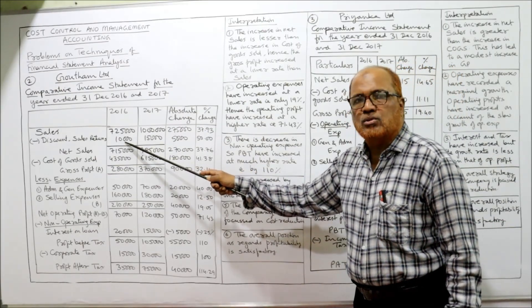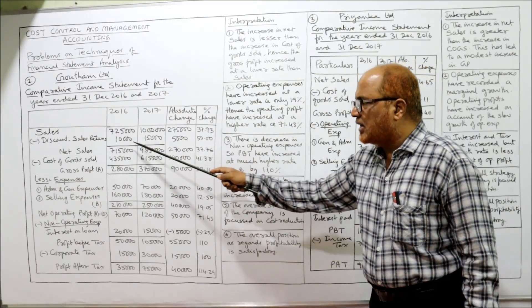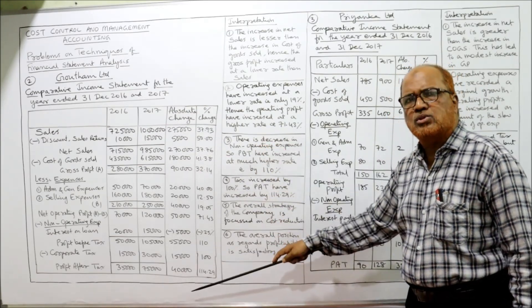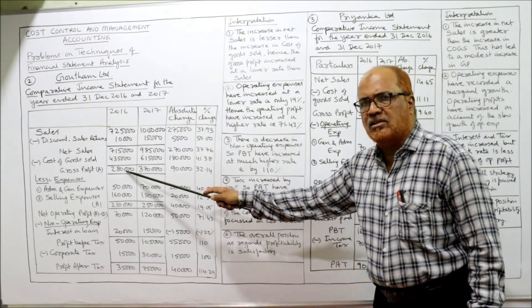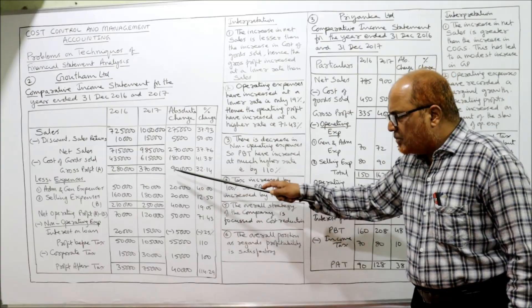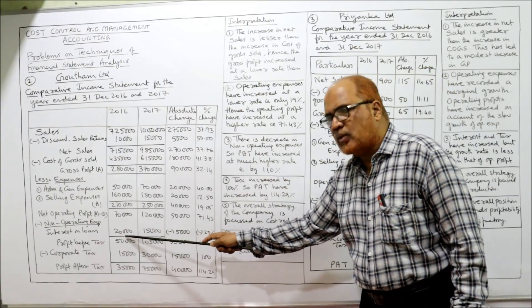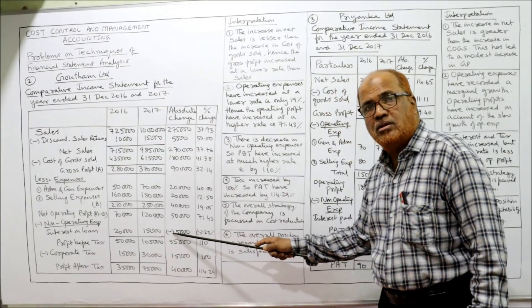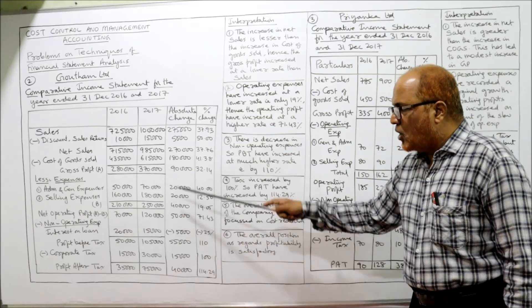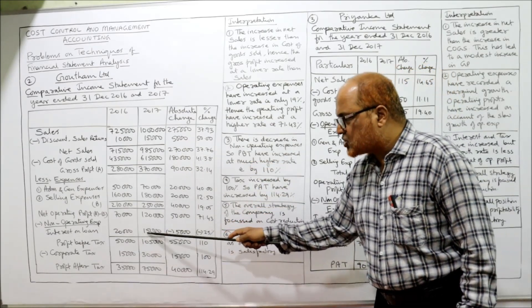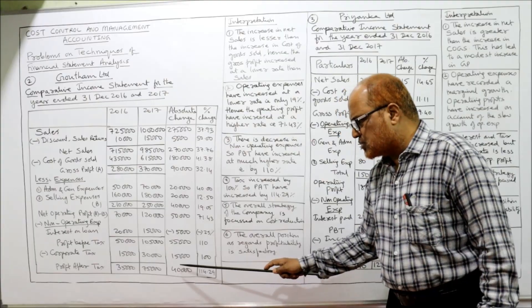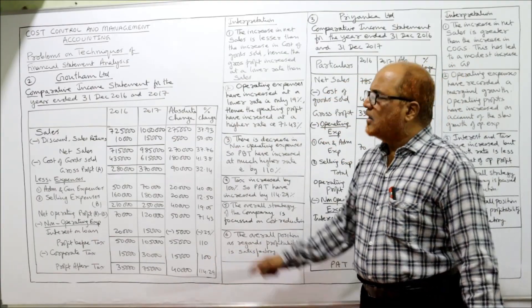Similarly, 15,000 minus 10,000 is 5,000; 5,000 divided by 10,000 into 100 gives 50%. The same procedure applies for all values. For gross profit: 370 minus 280 is 90,000; 90,000 divided by 2,80,000 gives 32.4%. Note that interest on loan: 15,000 minus 20,000 gives minus 5,000, so minus 5,000 divided by 20,000 into 100 gives minus 25% — meaning that expense decreased. Profit after tax: 75,000 minus 35,000 is 40,000; 40,000 divided by 35,000 into 100 gives 114.29%.